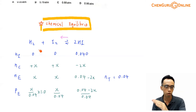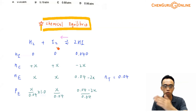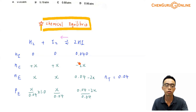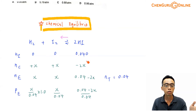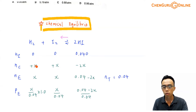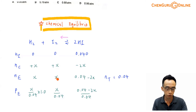The reaction starts in the reverse direction — HI reacts to form H2 and I2. Since I don't know the extent of the reaction, I let the change in moles of H2 and I2 each be X. Given the mole ratio of 1:1:2 in the equation, the change in moles is +X for H2, +X for I2, and −2X for HI. At equilibrium, we have X moles of H2, X moles of I2, and 0.04 − 2X moles of HI.